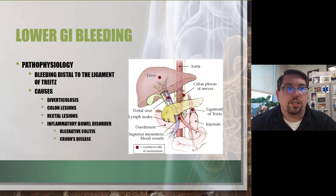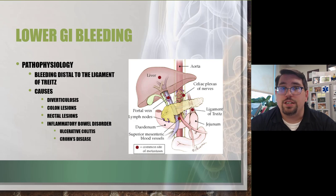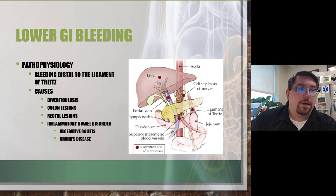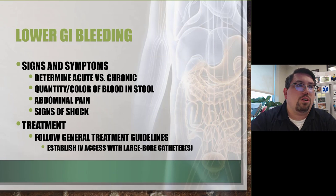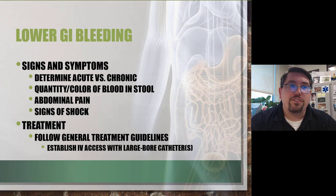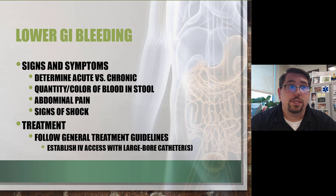Lower GI bleeds occur distally to the ligament of Treitz. Lower GI hemorrhages generally occur more frequently in conjunction with chronic disorders and anatomical changes associated with advanced aging. Your assessment for lower GI bleeds should be identical to upper GI bleeds — we really can't distinguish between the two in the field. After completing your primary assessment and treating life threats, move to secondary assessment. Ask the patient whether this is a new or chronic issue.